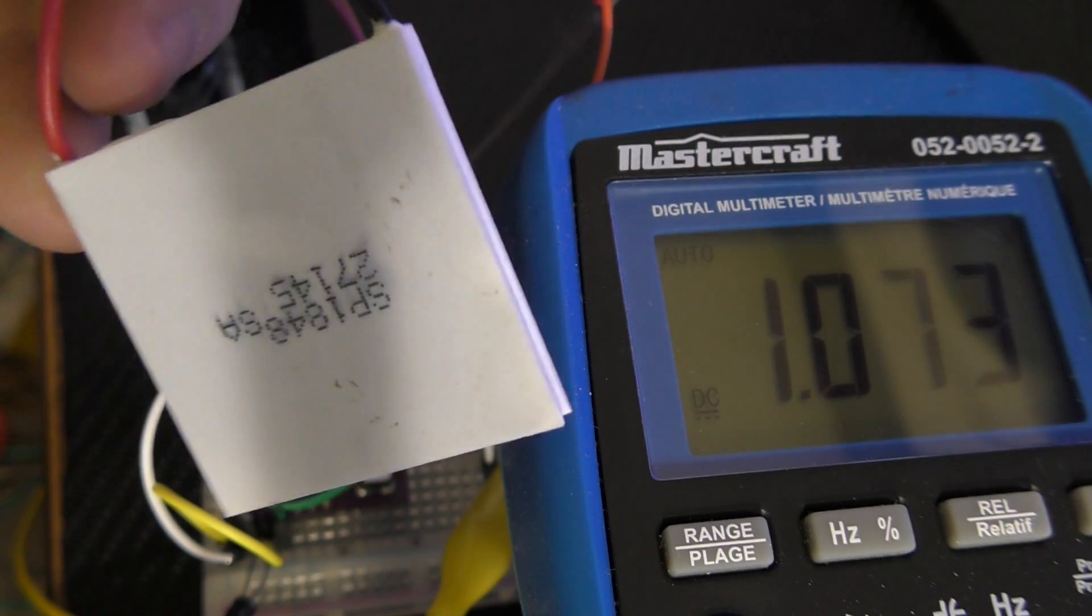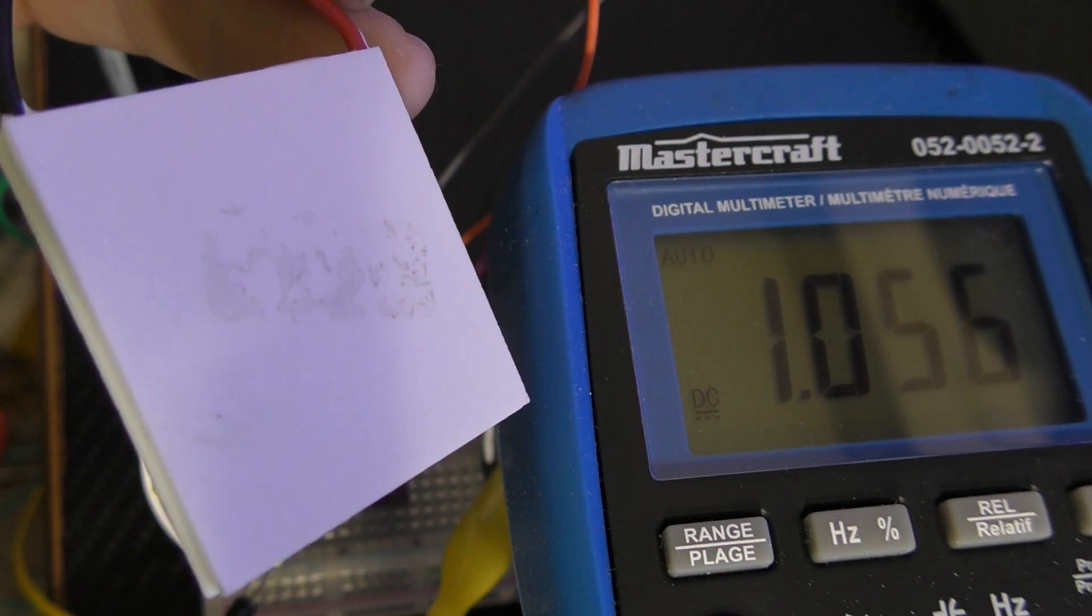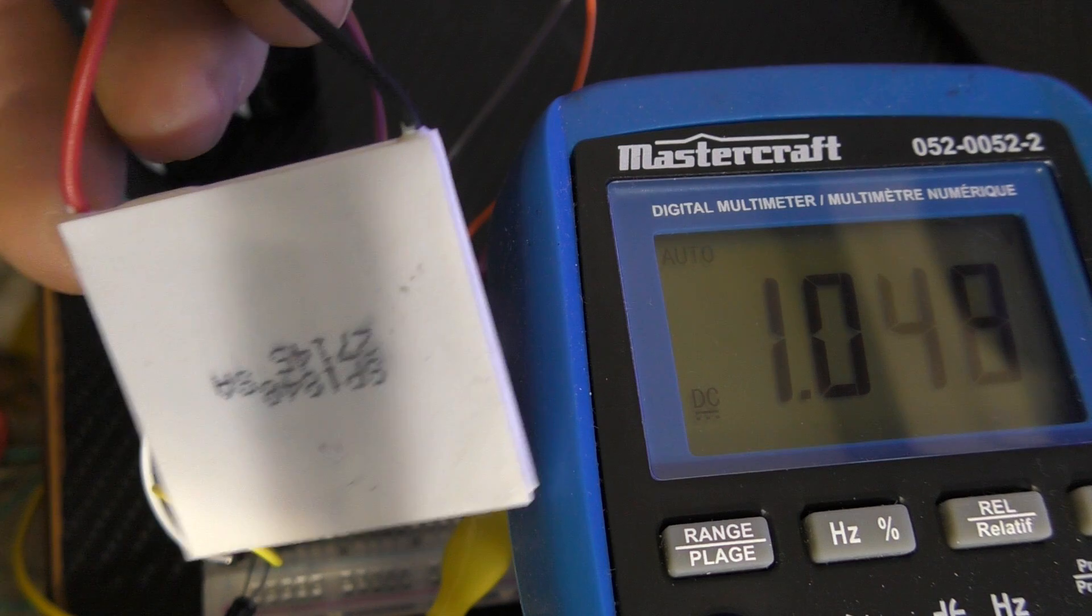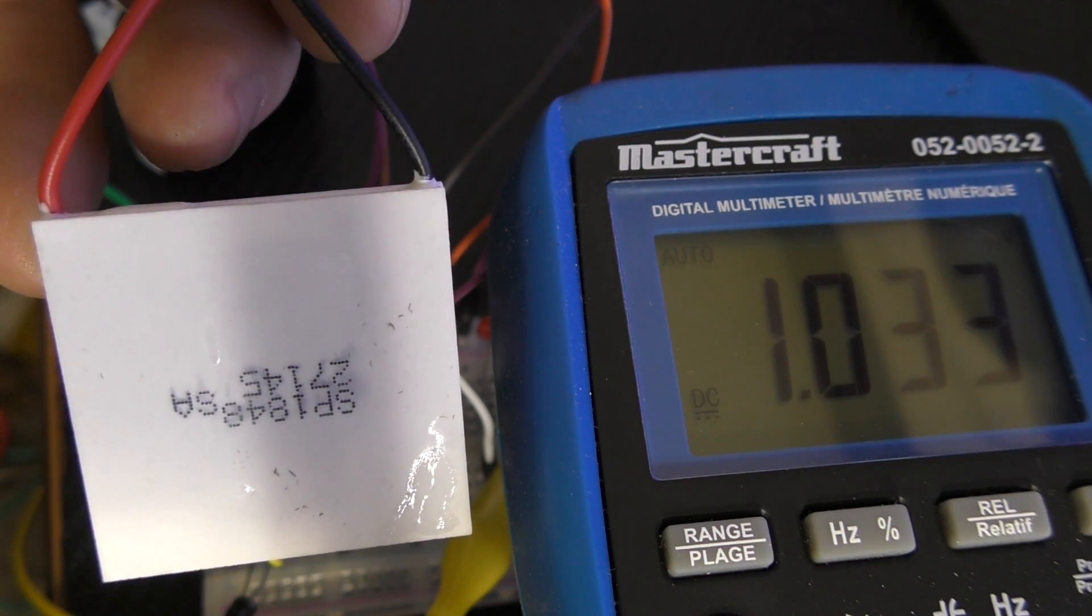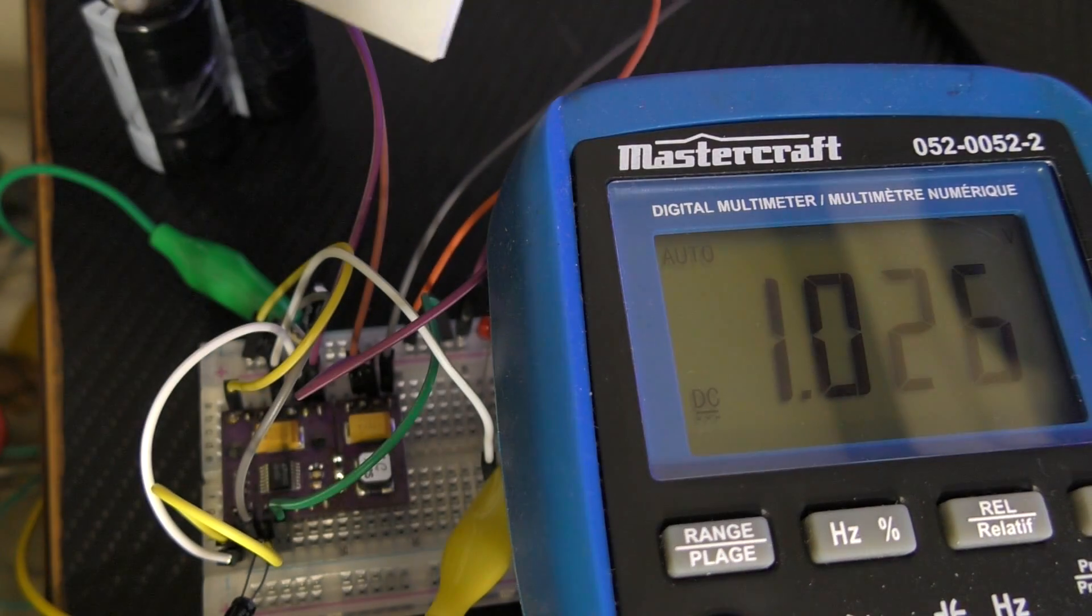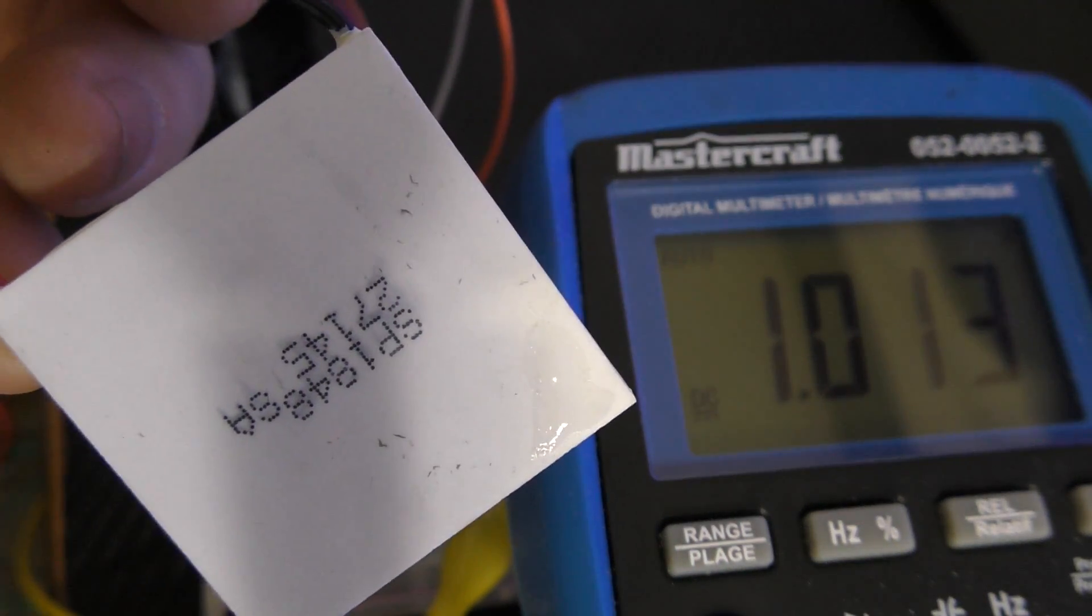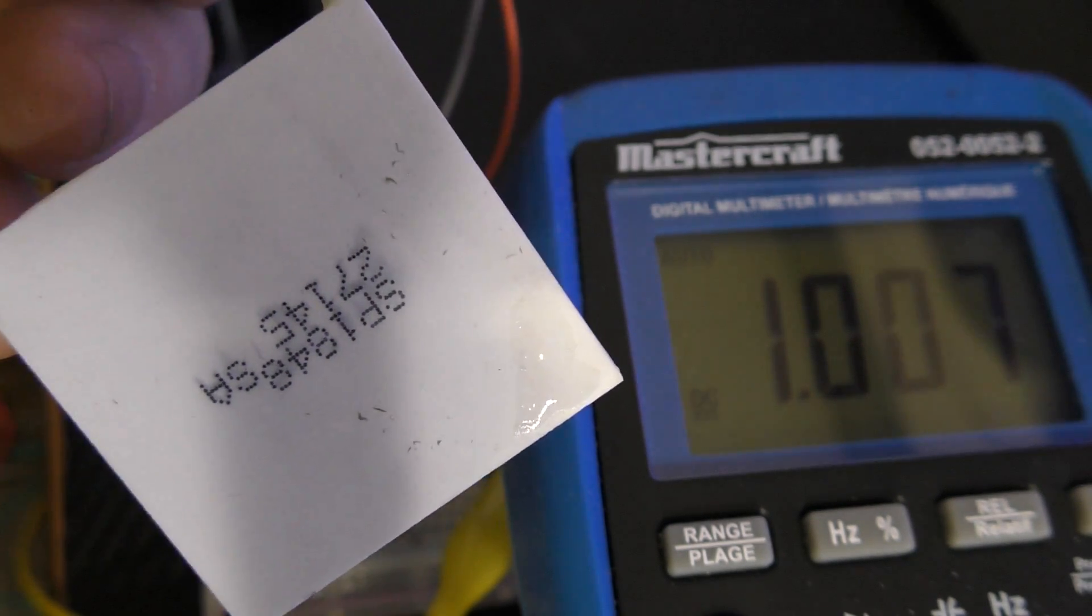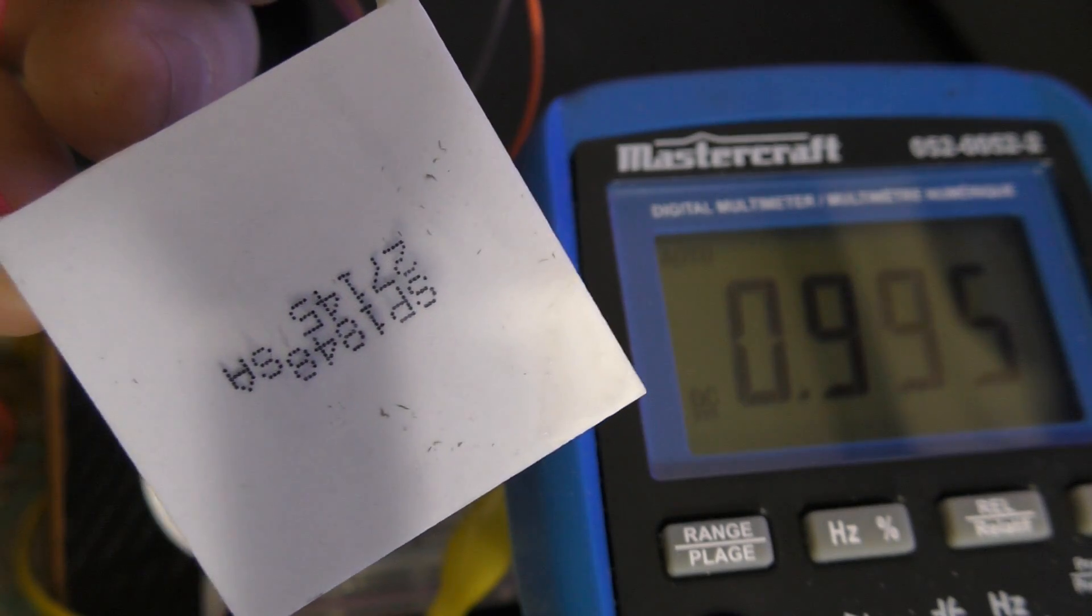So all this chip is, it's hundreds and hundreds of dissimilar metal junctions all wired together in series and coming out the wires on the end. The problem is that the voltage that comes out of this is incredibly small, like 20 millivolts, 30 millivolts if you're lucky, and that's if you've got a lot of heat differential.